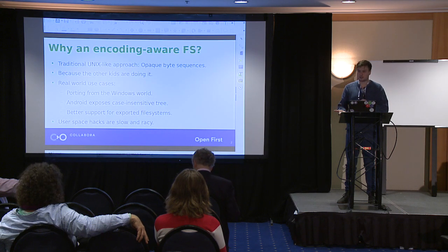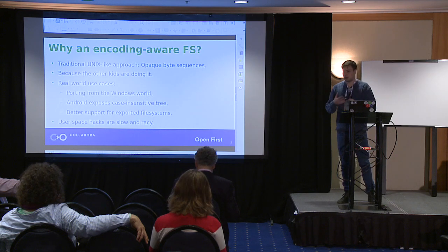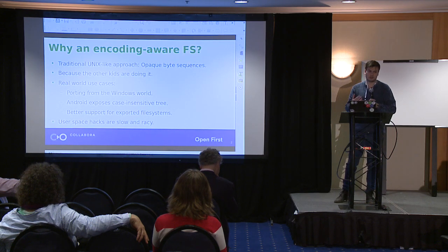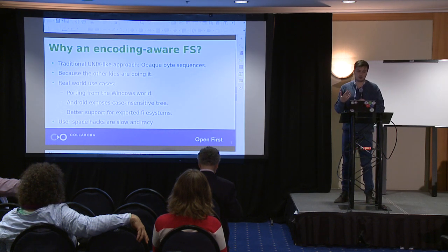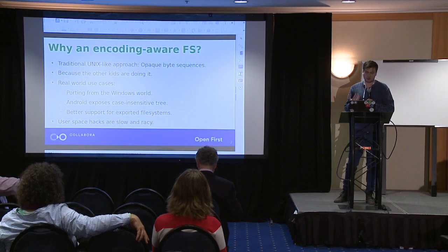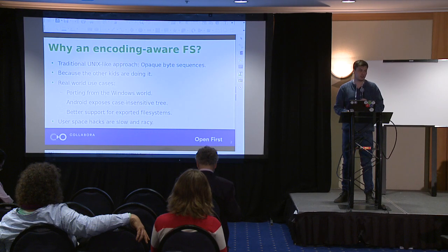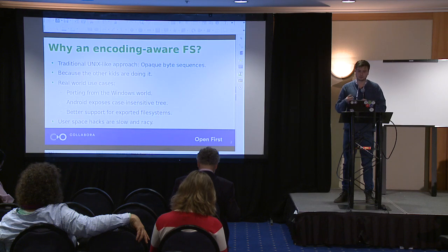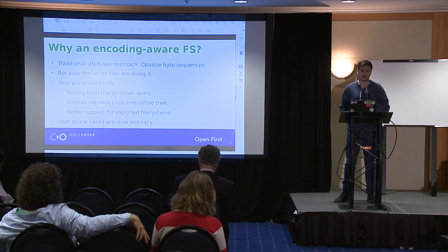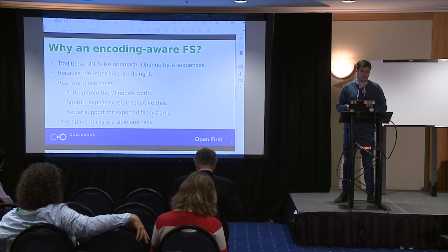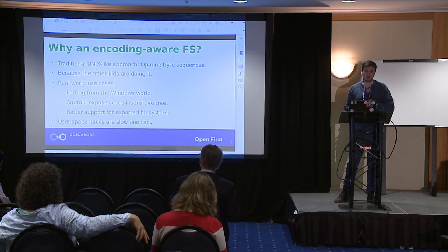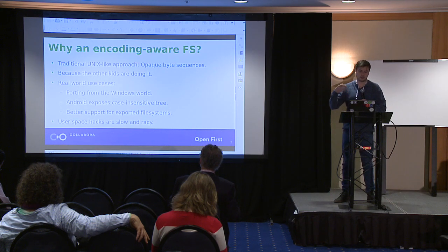So why an encoding-aware file system? Well, traditional Unix file systems have always relied on the assumption that file names are packed byte sequences — they are simply byte strings, null-terminated. Any set of characters is a valid file name if you don't have a slash or a null character in the middle.